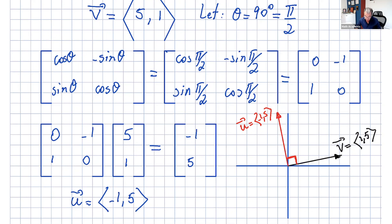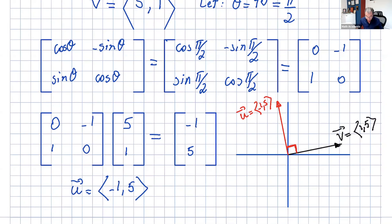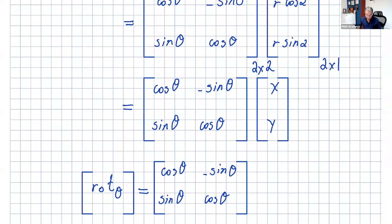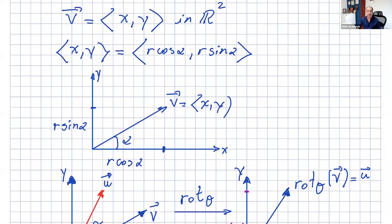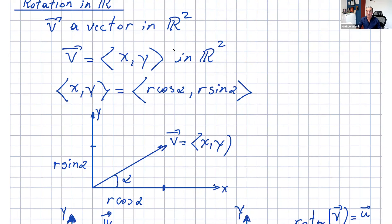Our goal was to rotate this vector 90 degrees counterclockwise, and that's what happened. This is a linear transformation because we're involving a matrix — whenever you take a vector and multiply it by a matrix, that's a linear transformation. In this case the vector is rotated. Matrices can also make vectors longer, project them, and these are all examples of linear transformations. We also have the rotation matrix in R3. Thank you for watching, I'll see you in the next video!